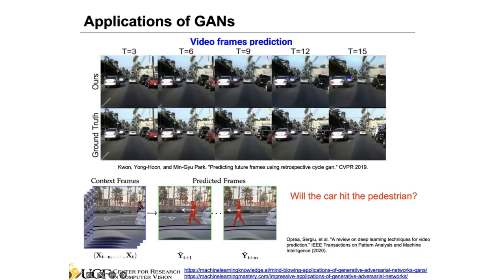For example, there may be a pedestrian behind a car that the camera or detection algorithm cannot accurately detect, creating a collision risk. But if we use a generative model to predict future frames — maybe 10 or 30 frames ahead — we can predict that this person is moving in a certain direction. Based on those predicted frames we can detect the person earlier, and the potential collision can be avoided.